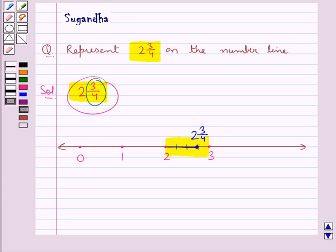So we have represented the number 2 and 3 upon 4 on the number line. Let this point be point A. So we say that the point A on the number line represents 2 and 3 upon 4.